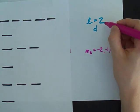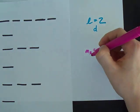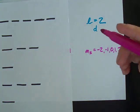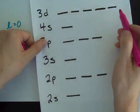If L was three, we'd go from minus three all the way to plus three, which is seven different numbers. And you'd have seven dashes.